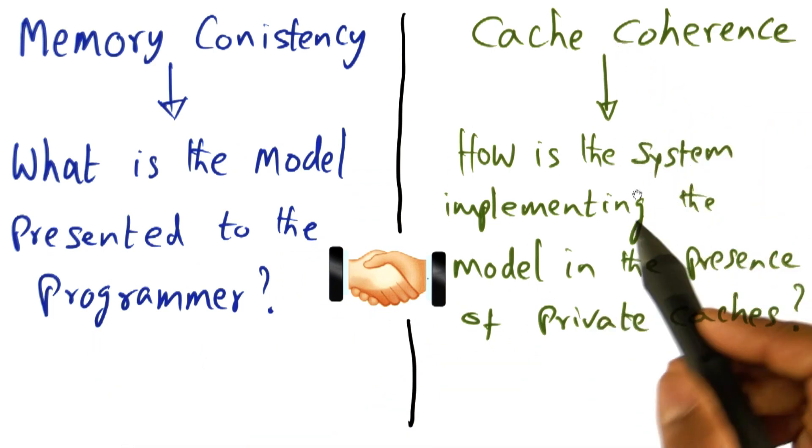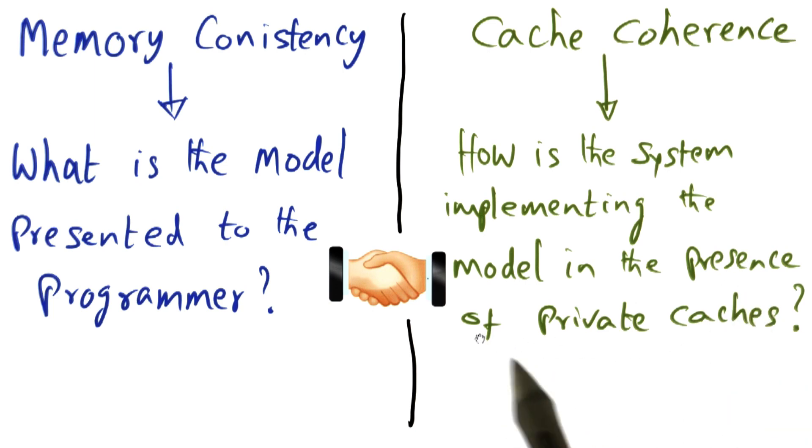On the other hand, cache coherence is how the system implements the model in the presence of private caches.